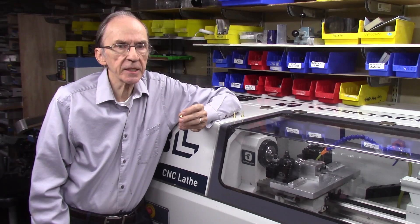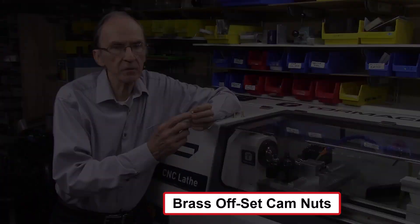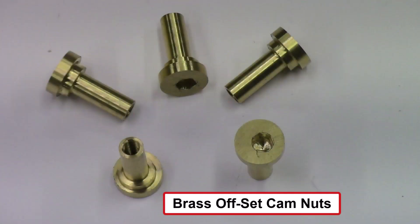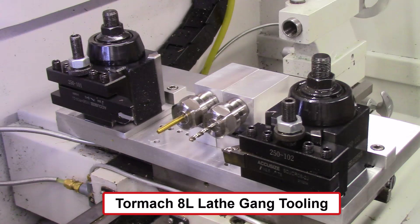In this video I will be designing and editing the G-code to machine these brass offset cam nuts on a Tormac 8L lathe using the gang tooling for the Tormac 8L lathe that I described in a previous video.